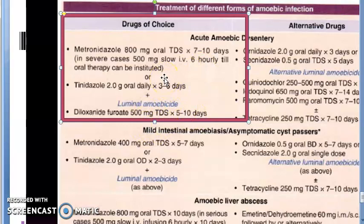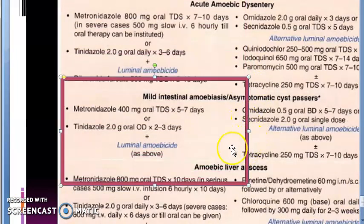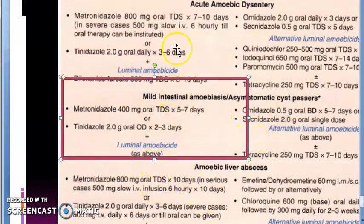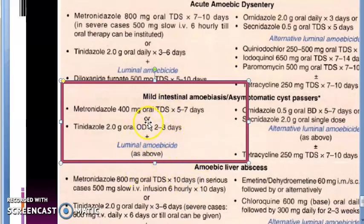For mild intestinal amoebiasis, the same drugs are used. Metronidazole is given at 400 mg — lower than the 800 mg used in acute cases. Tinidazole is still 2 grams once daily, but for a shorter duration since it's a milder form. A luminal amoebicide also has to be given — diloxanide furoate thrice daily — same as before.